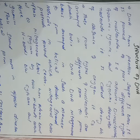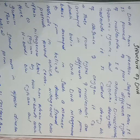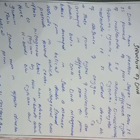DNA has pentose sugar as its base. Pentose sugar is the base for all nucleotides, so DNA also has pentose sugar as its base. It is a five-carbon sugar. DNA is formed of four different types of nucleotide bases: adenine, guanine, thymine, and cytosine.